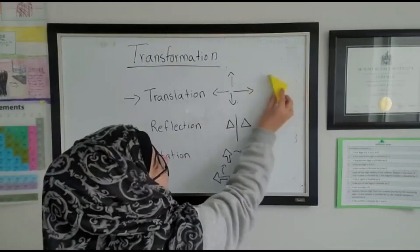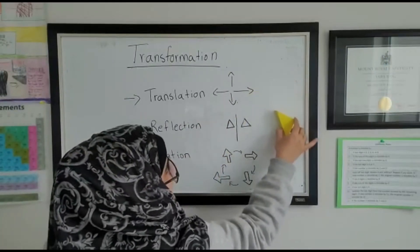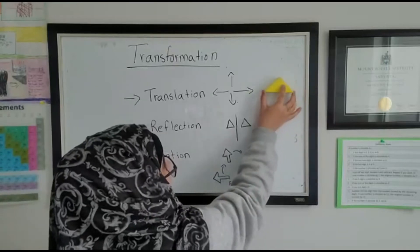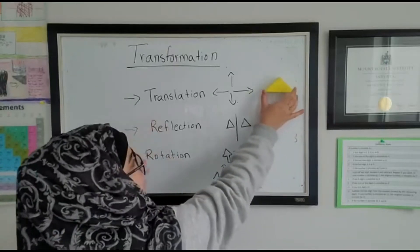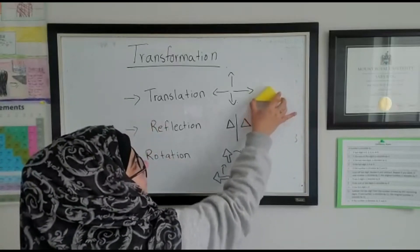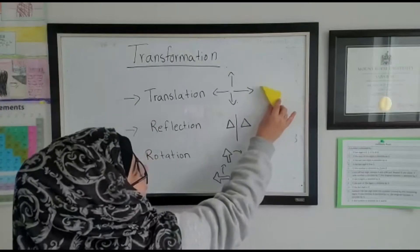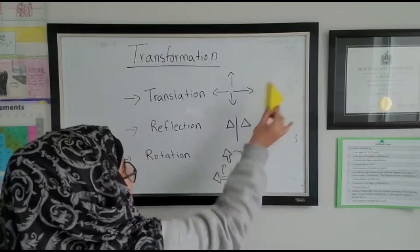So you're not changing the rotation when you're sliding it down. If you're doing only translation, then only translate it down, up, left, or right. Don't change the orientation.